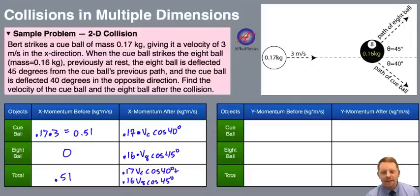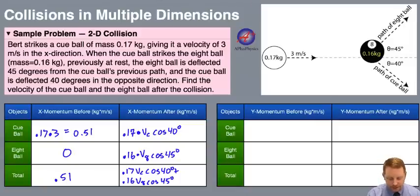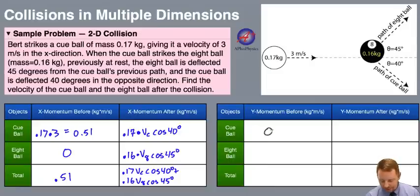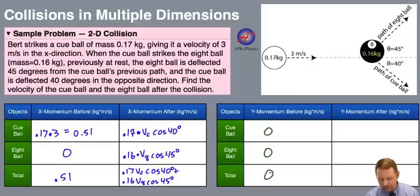Now let's do the same thing in the y direction. In the y direction, the cue ball's y momentum before must be 0 — there's no velocity in the y direction. Same with the 8 ball, so the total momentum in the y direction before the collision must be 0.